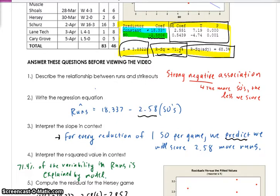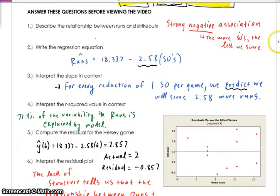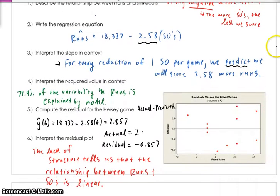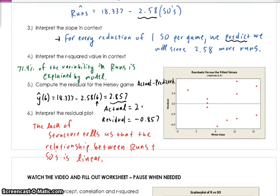R squared is right here. That is the percentage of variability explained by the response variable. So 71.48% of the variability in runs is explained by the model. And residuals, remember, are actuals minus predicted. So the actual value for the Hersey game of the response variable is we actually scored 2 runs. We won this game 2 to 0. The predicted, if I plug in the number of times we struck out that game, which was 6, we predict we scored 2.58 runs. And so the difference between those two actual minus predicted is negative 0.857. That's the residual.